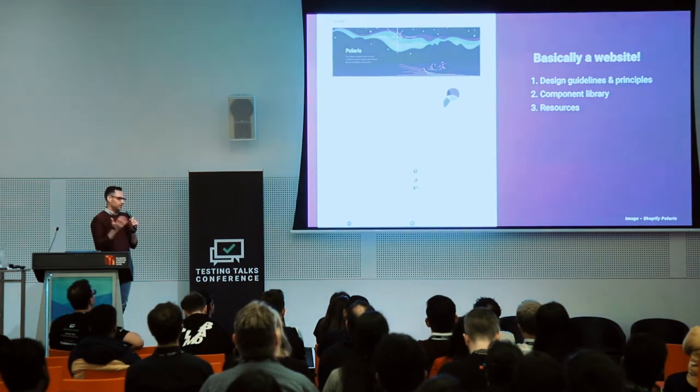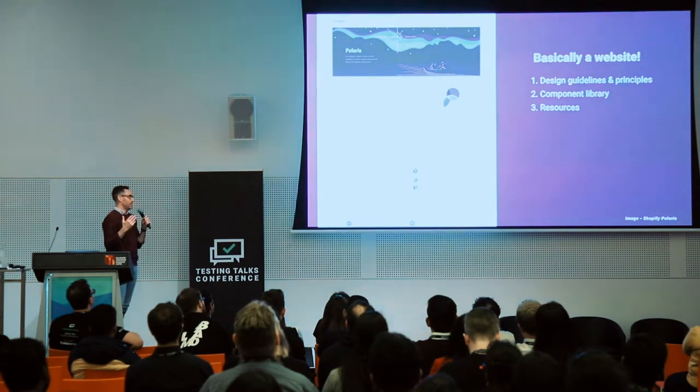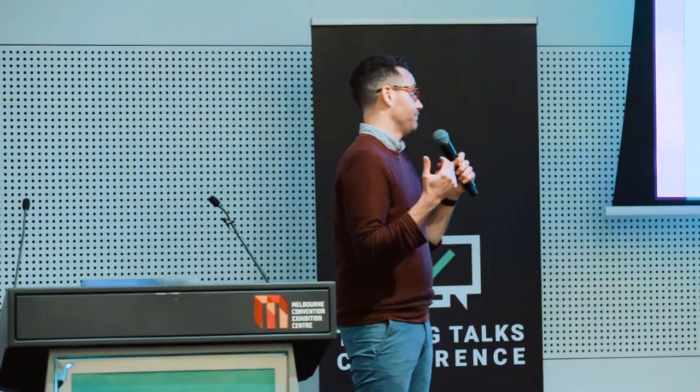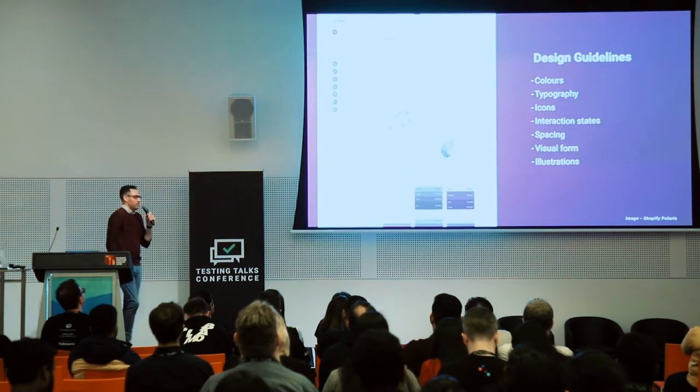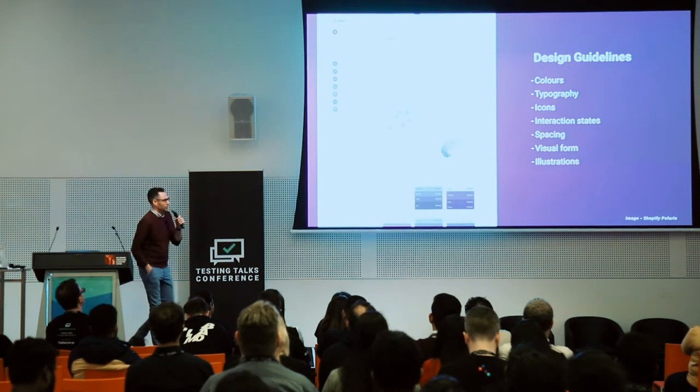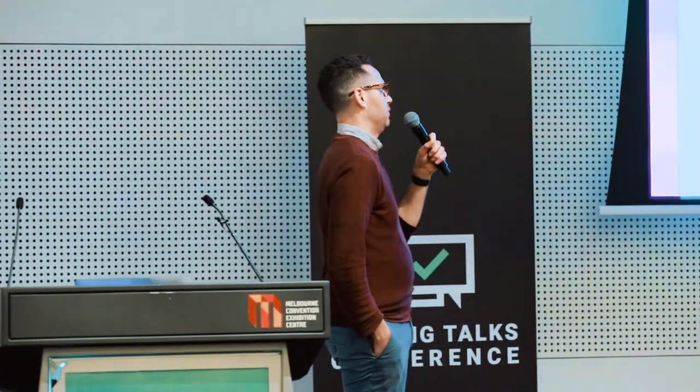So that's components. But a design system is basically a website with three main areas: design guidelines and principles, the component library, and resources. The design guidelines cover things like colour, typography, interaction design, icons, spacing, visual form, and illustration.